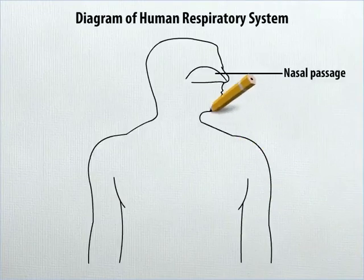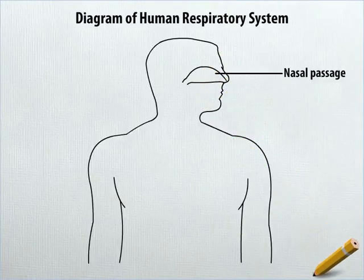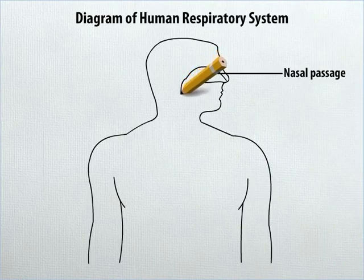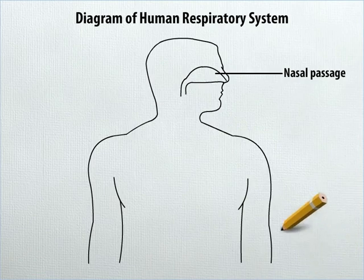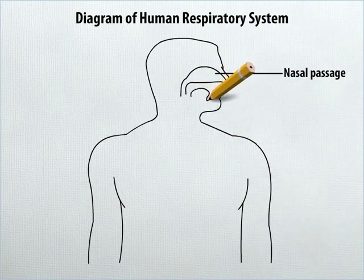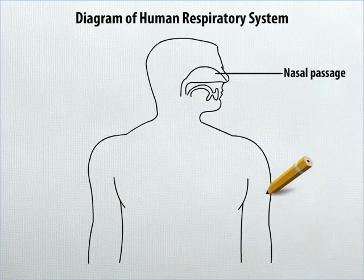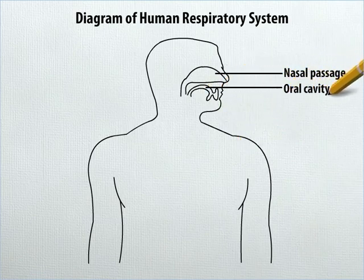Now narrow the nasal passage to form a tube and extend it a little downwards. To the right of it, draw an inverted C with a projection on its head as shown. Label the space enclosed within the inverted C as oral cavity.